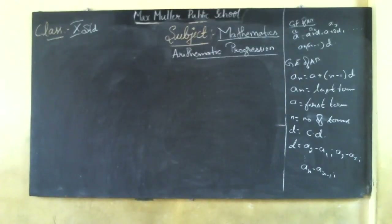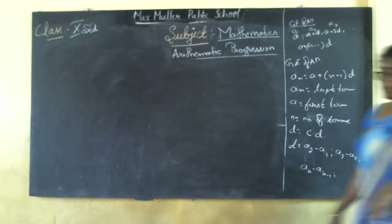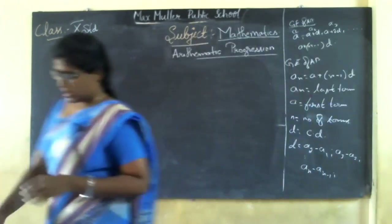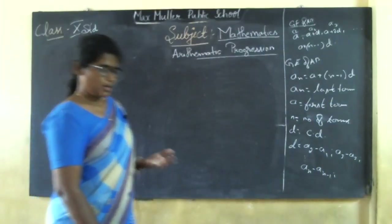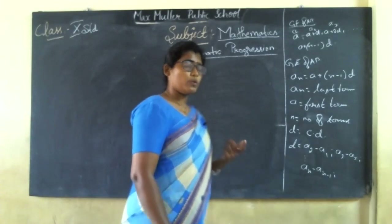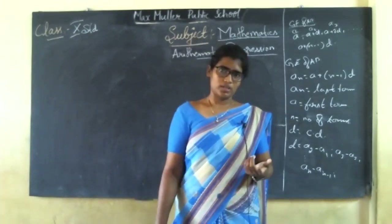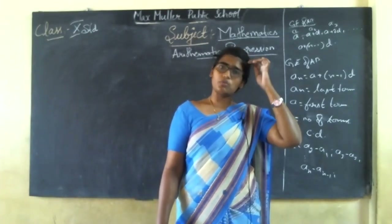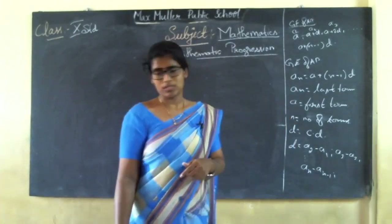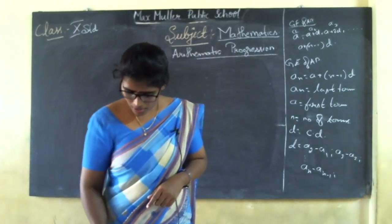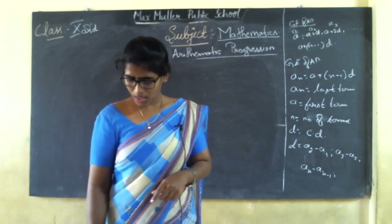Very good morning children. Let us continue with the topic. In the last class, you had learned about the sequence when the n value was not given but the last term value was given. How are you going to solve that problem — you learned that. Similarly, we have two more sums based on that type, so let us start with those.